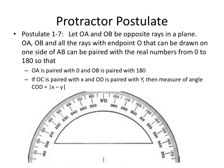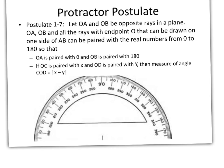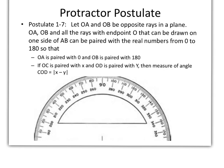Now let's talk about the protractor postulate. We're going to let OA and OB be opposite rays in a plane. And I am going to make this a little smaller so that you can see what I do here. So O is going to be this point here. And A is going to be this point over here. And B is going to be this point over here. We're going to assume that these rays extend out towards infinity.